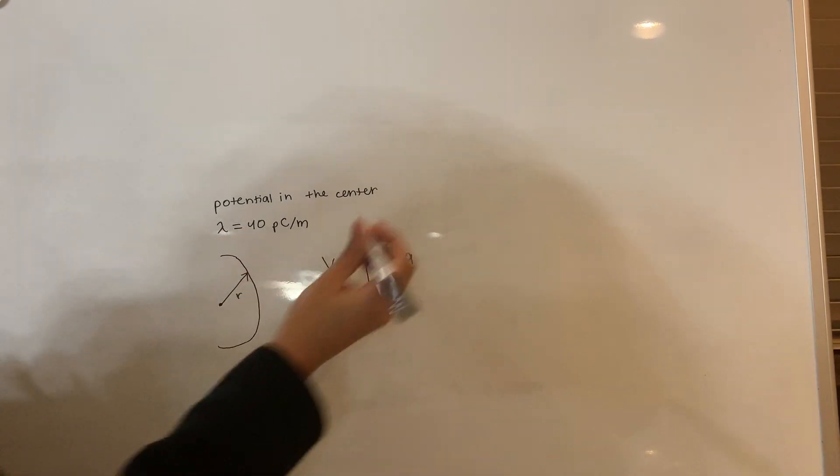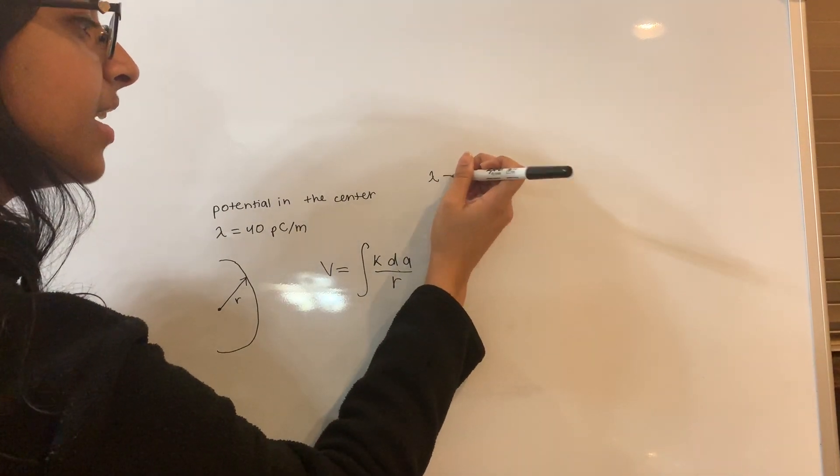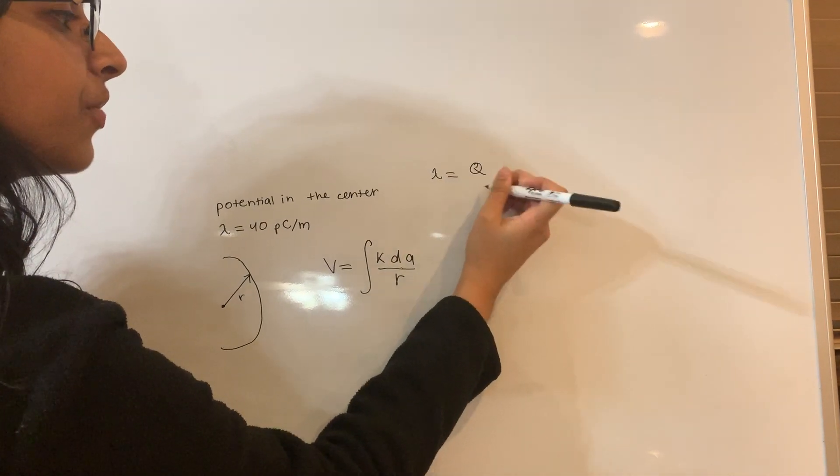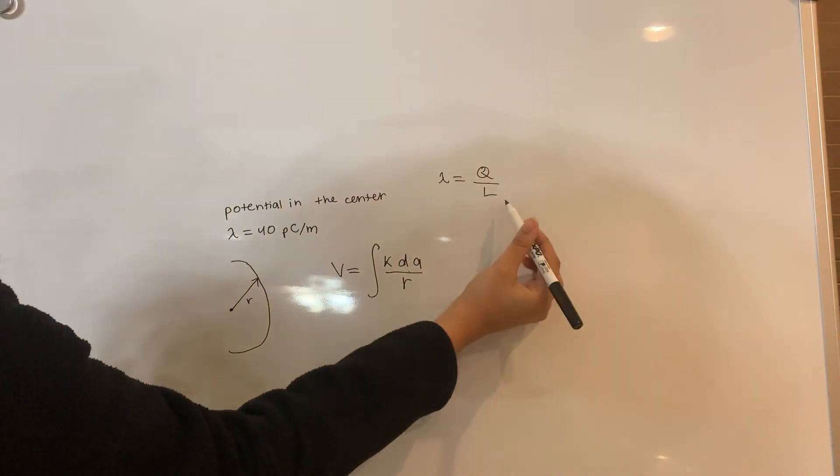So we are given lambda. We know that lambda is a linear charge density, which is going to equal q over l, so the total charge over the total length.